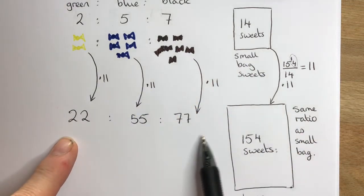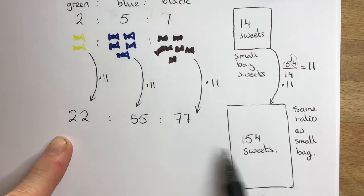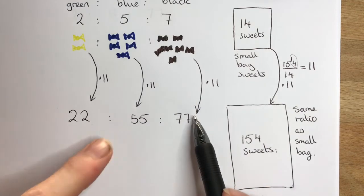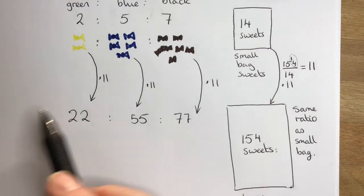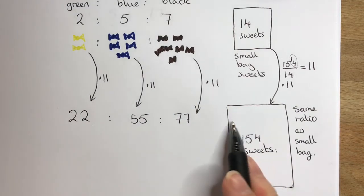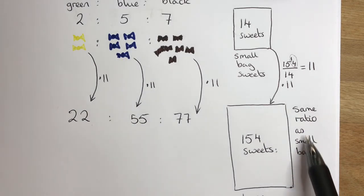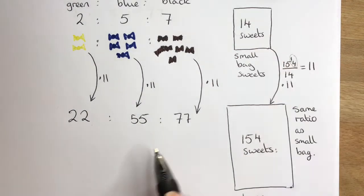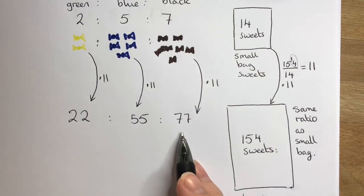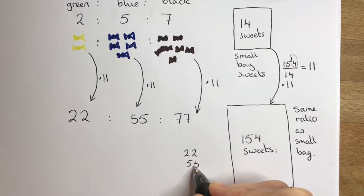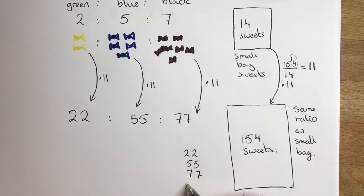The selection in the bag of large sweets would be 22 green, 55 blue, and 77 black. Before we finish and answer the question, we can do a check here because if we add this number up of all the loose sweets, we should of course get the total of 154.